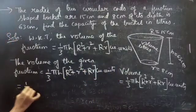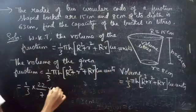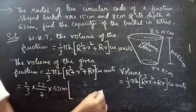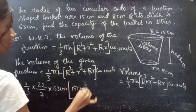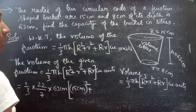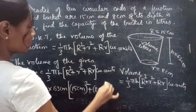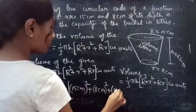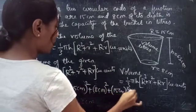This equals 1/3 × (22/7) × 63 centimeter × (15² + 8² + 15 × 8). No need to write units mid-calculation; after making the calculations we will carry forward the correct units.